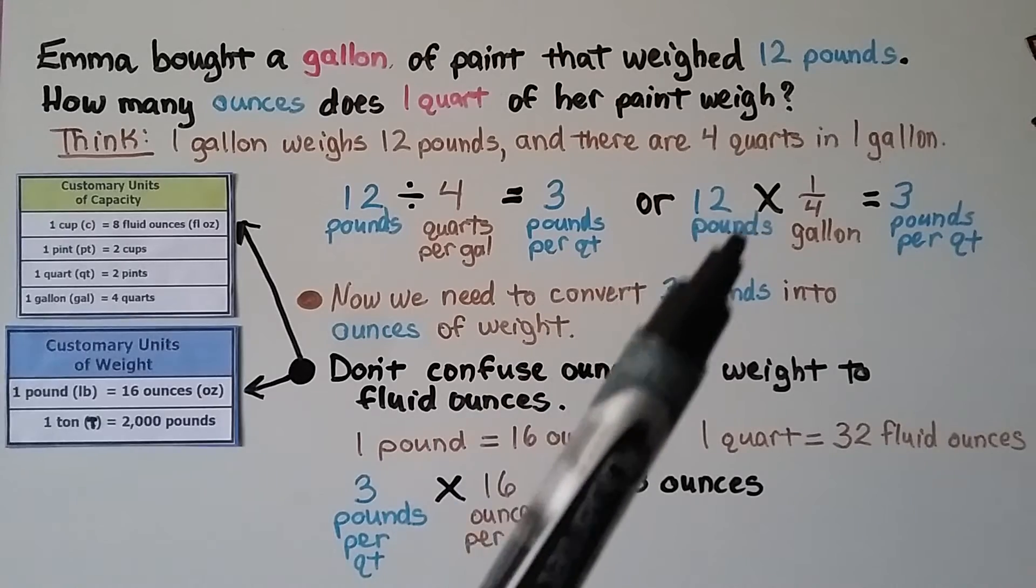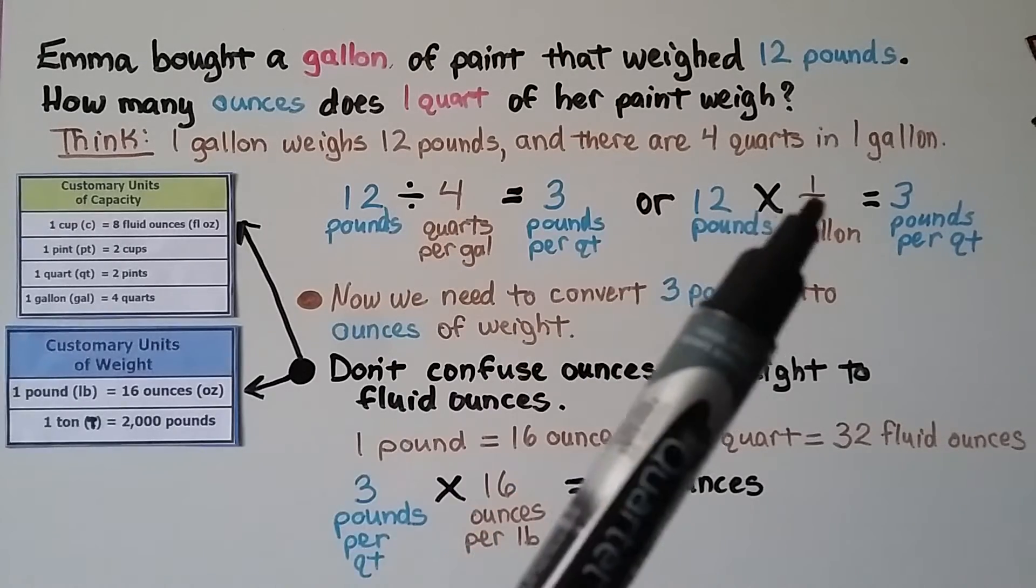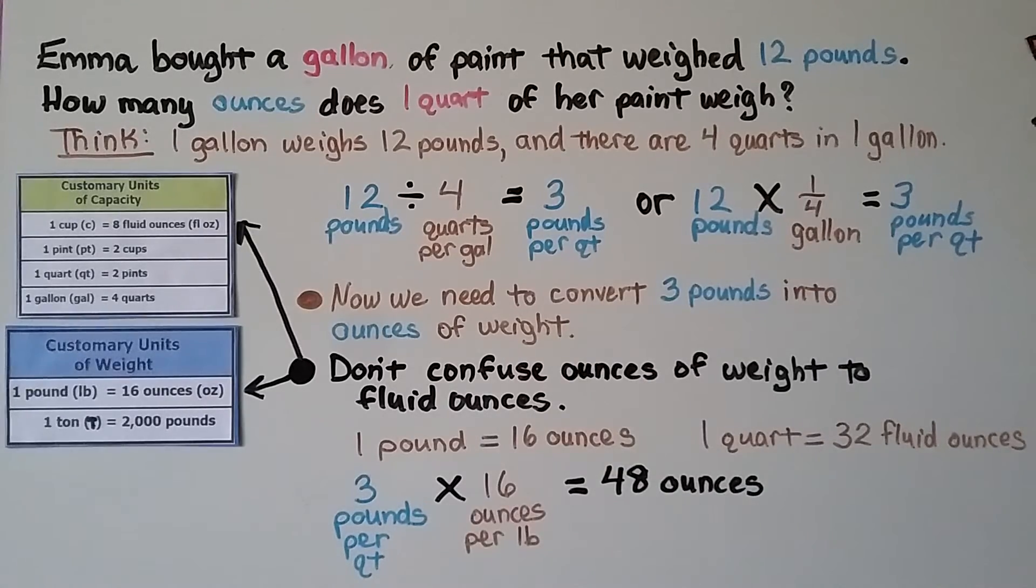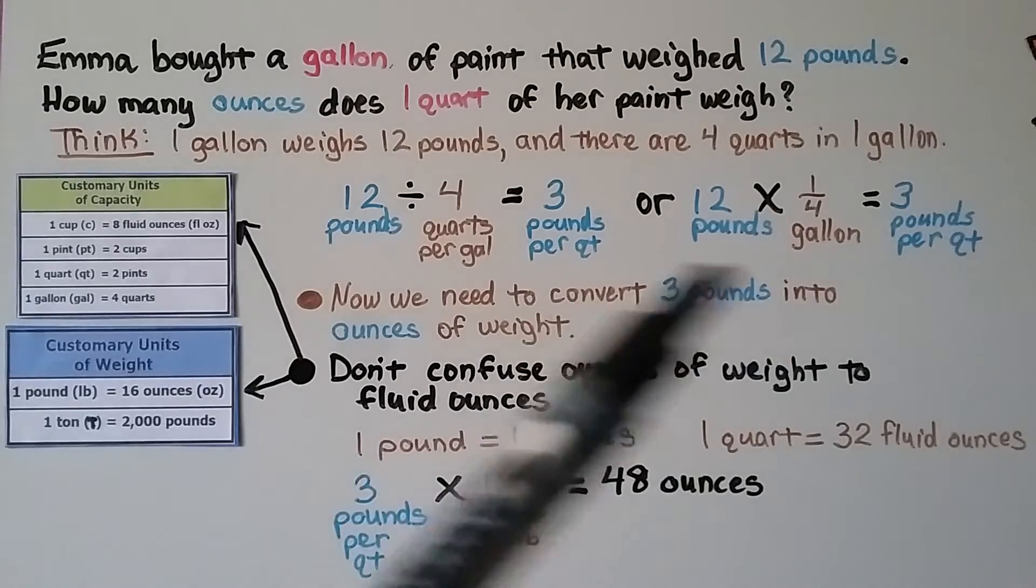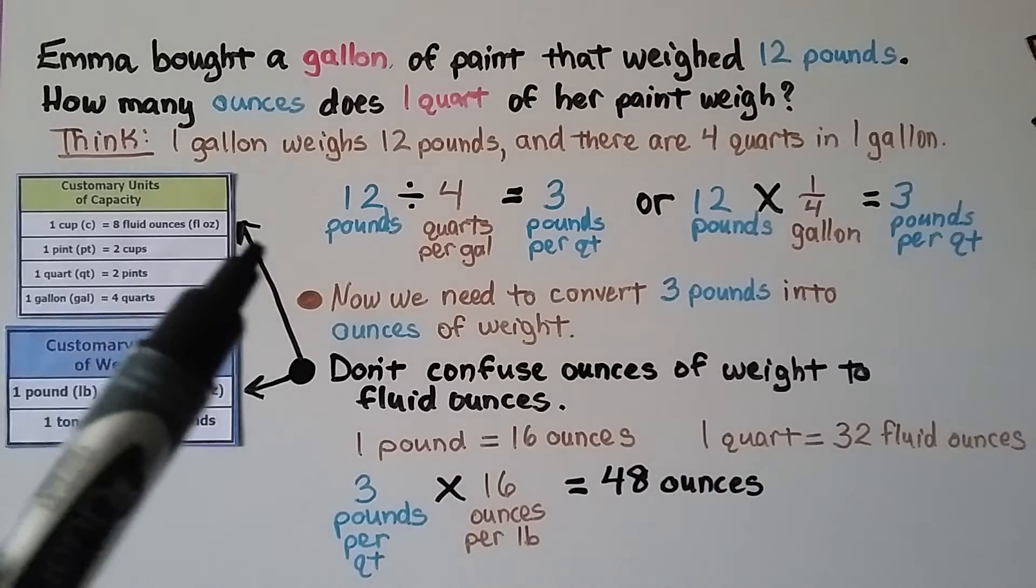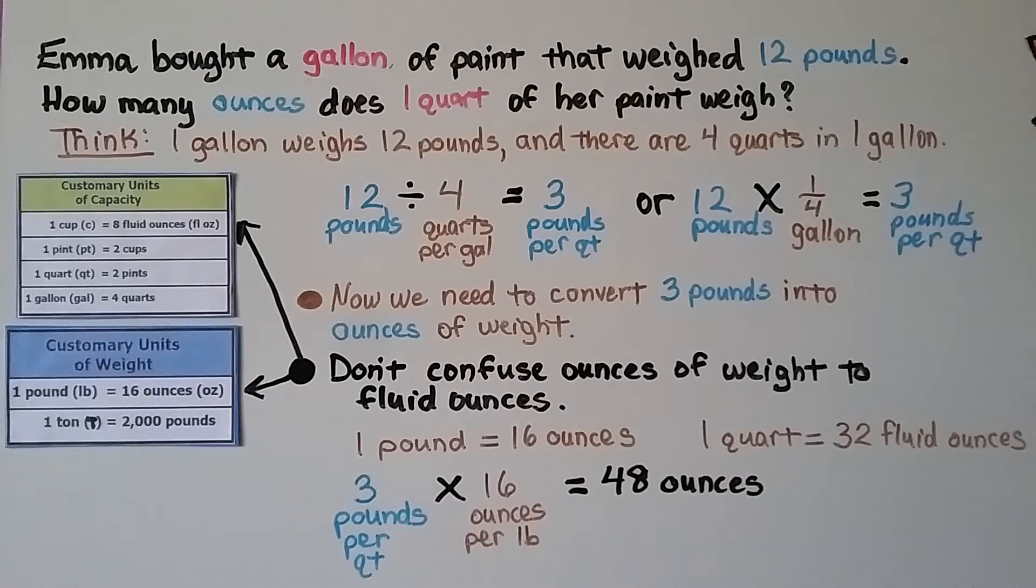We could also do twelve pounds times one-fourth gallon. Because there's four quarts in a gallon, one quart would be one-fourth of the gallon. And that would give us three pounds per quart. Now we need to convert the three pounds into ounces of weight. Now don't confuse ounces of weight to fluid ounces. One pound for weight is equal to sixteen ounces. One quart is equal to thirty-two fluid ounces. It's very important that that says fluid ounces. Three pounds per quart times sixteen ounces per pound. That's forty-eight ounces for one quart.